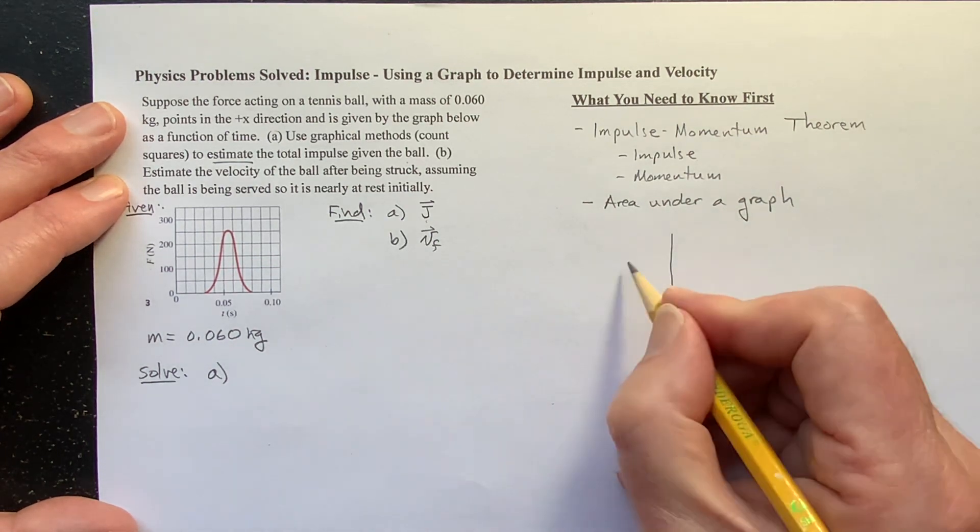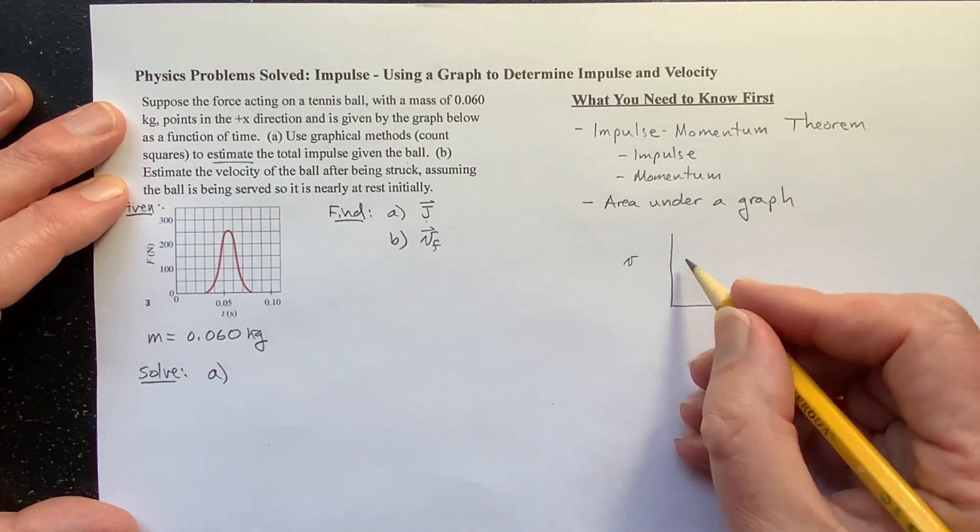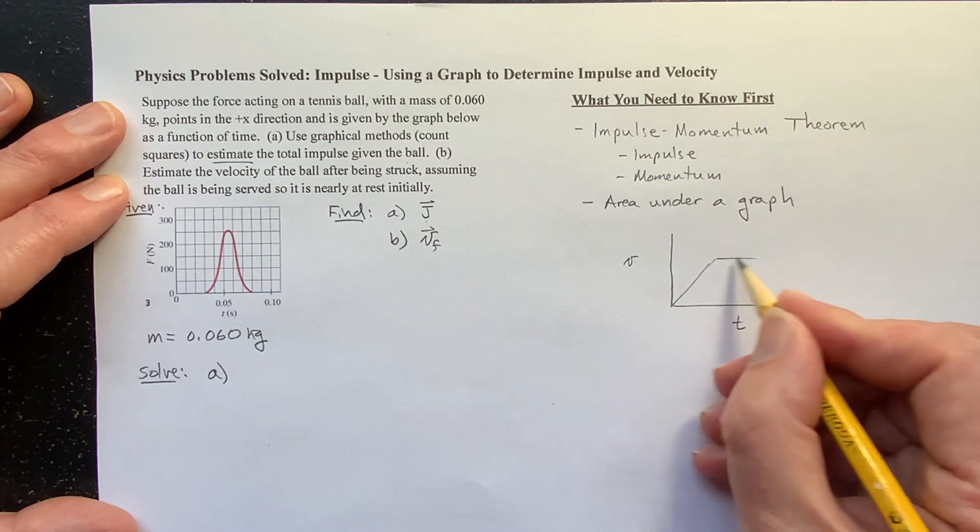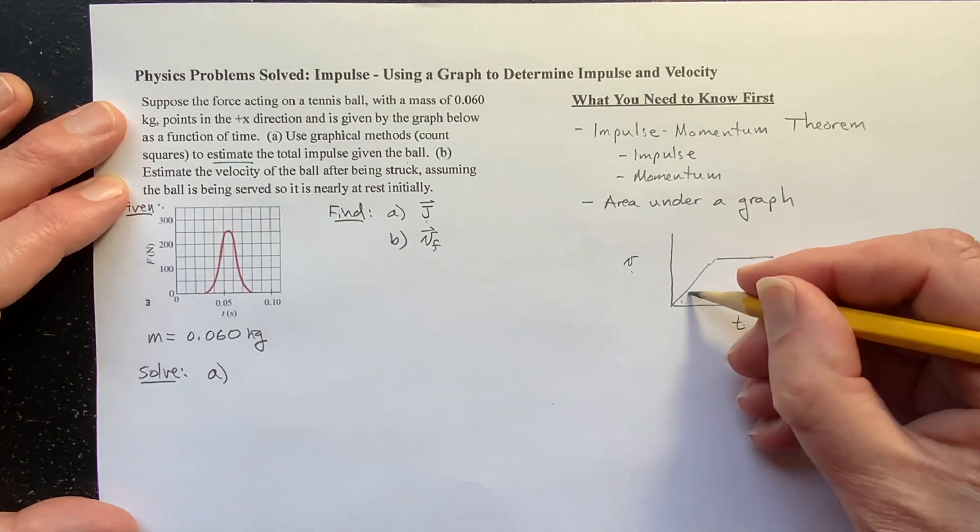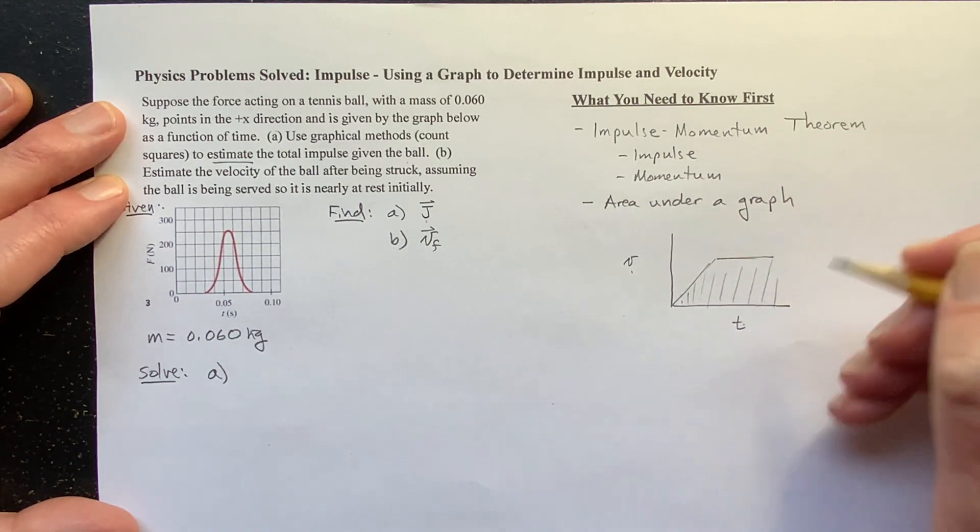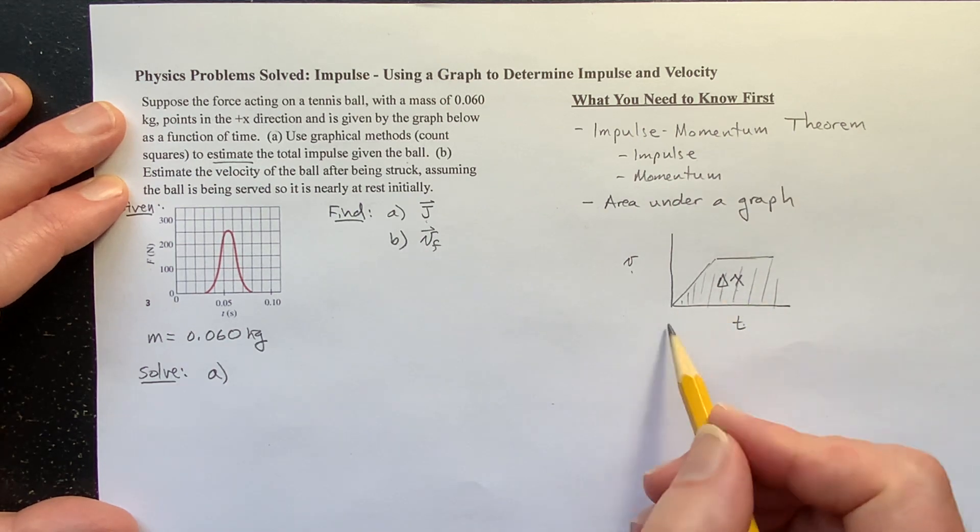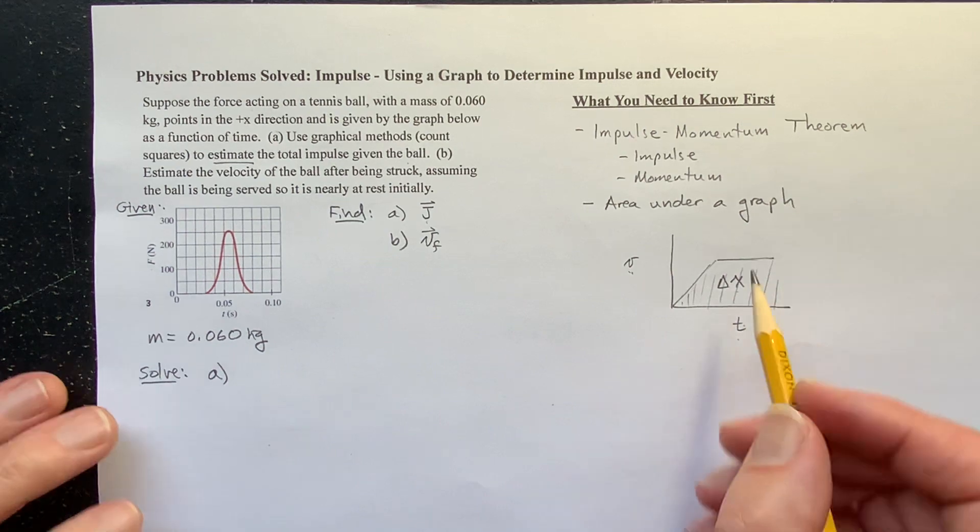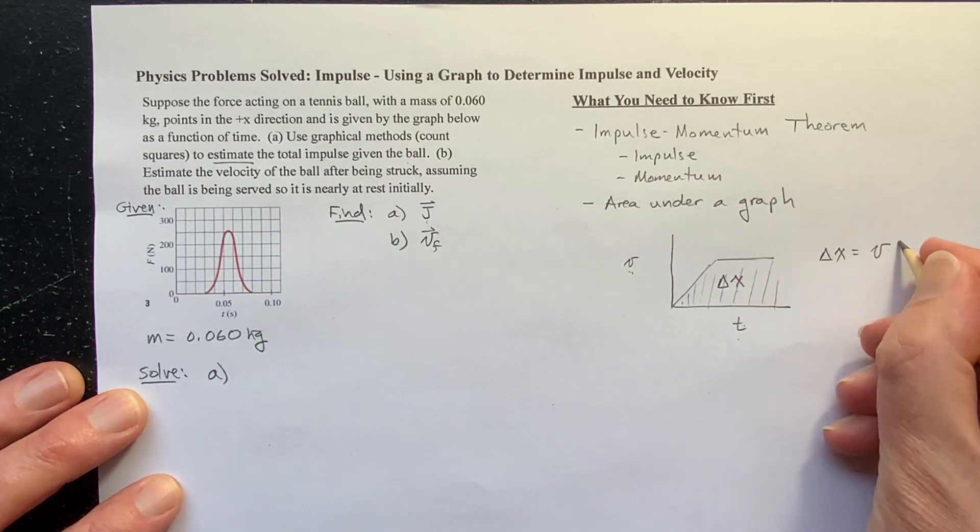Remember when you did kinematics, if you had velocity as a function of time, let's say you had a velocity that maybe went up like this and then stayed constant. Remember that velocity times time is displacement. So you said delta x equals velocity times time. But of course, this velocity is varying. So this really isn't quite proper.